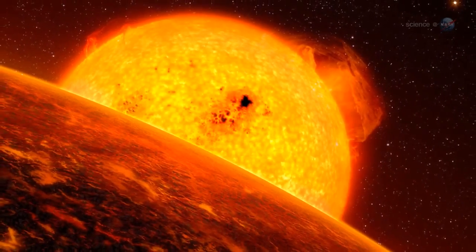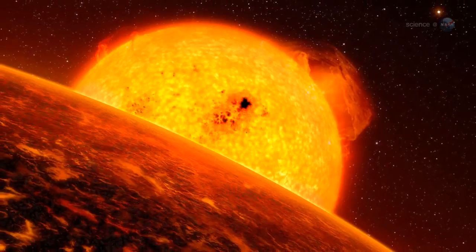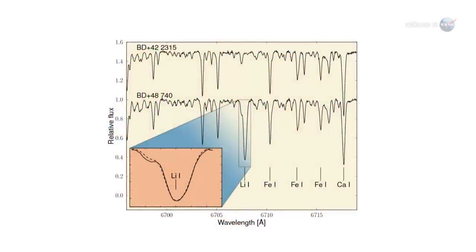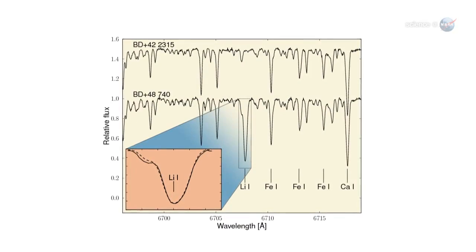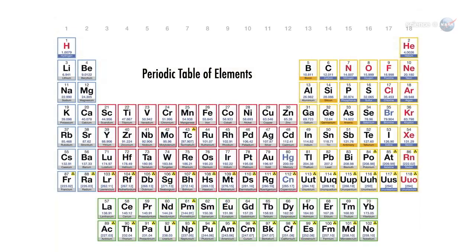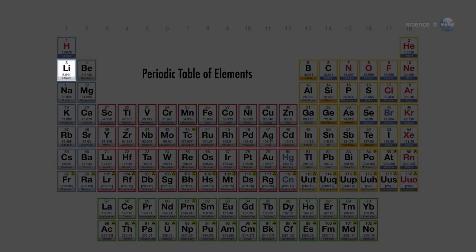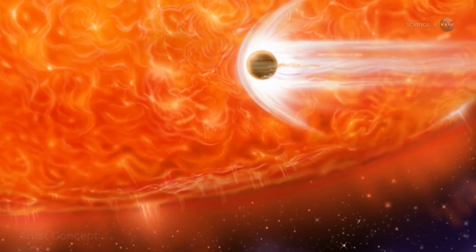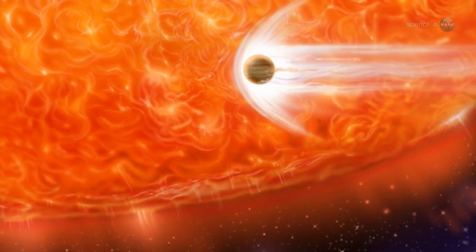Observations of red giant BD plus 48740 lend credence to the second possibility. Our detailed spectroscopic analysis of BD plus 48740 reveals that the red giant contains an abnormally high amount of lithium, says Monika Adamow, who led the study at Nicholas Copernicus University in Torun, Poland. Because lithium is easily destroyed in stars, finding lots of it in an old red giant is unexpected.